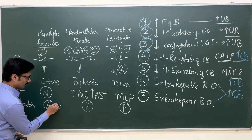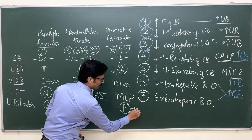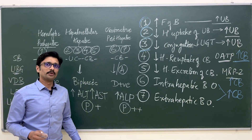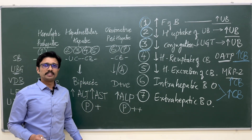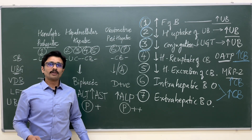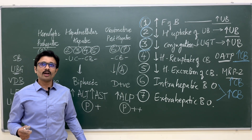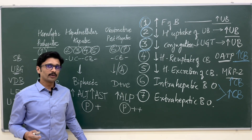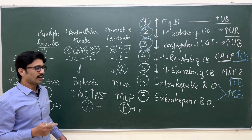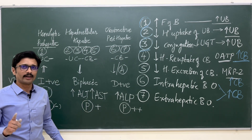So urine bilirubin is negative in hemolytic jaundice and positive in hepatocellular and obstructive jaundice — more so in obstructive. If there is more bilirubin in the urine, the urine color will be dark brown. The patient can complain of passing tea-colored or cola-colored urine. This dark brown, cola-colored, or tea-colored urine indicates presence of excess bilirubin in the urine, pointing to either hepatocellular or obstructive jaundice — not hemolytic jaundice.